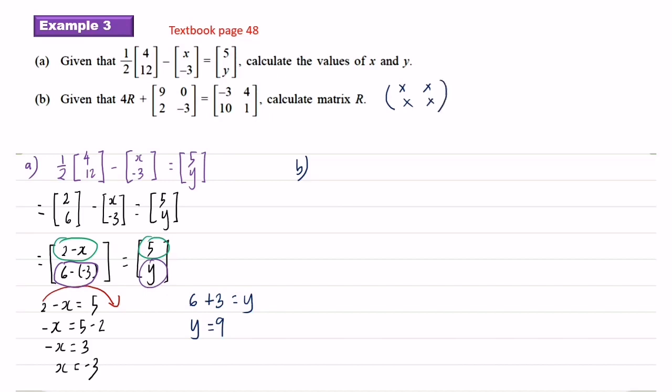Part B: Given that 4R plus the matrix 9, 0, 2, negative 3 equals the matrix negative 3, 4, 10, 1, calculate matrix R. Matrix R is a 2 by 2 matrix. If matrix R not a 2 by 2, you cannot add and obtain the answer in order 2 by 2. Okay, this one you must understand. Copy down the equation first.